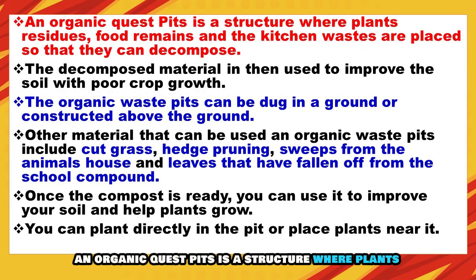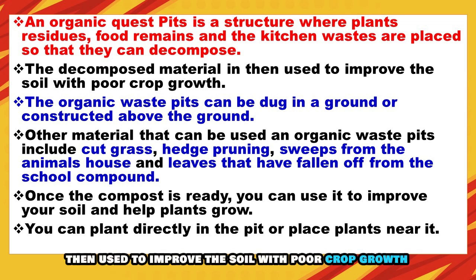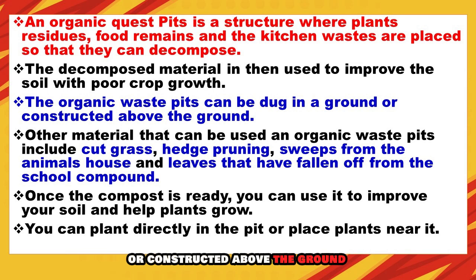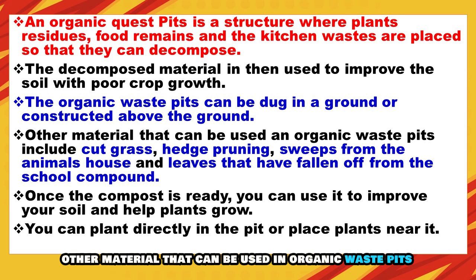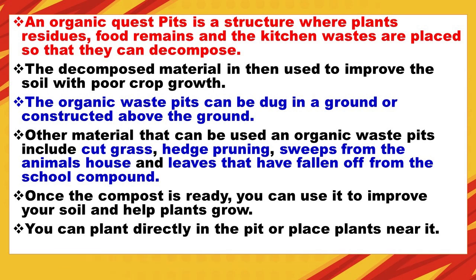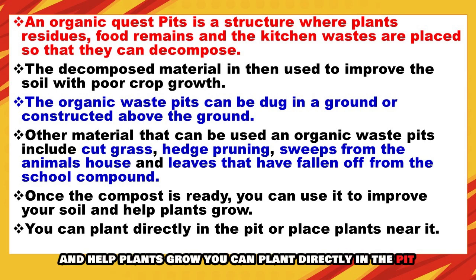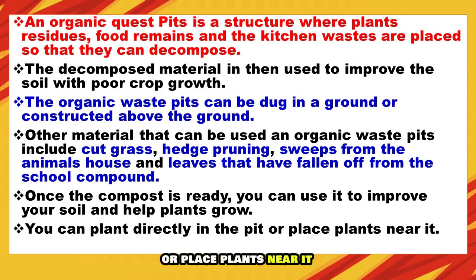An organic waste pit is a structure where plant residues, food remains, and kitchen wastes are placed so that they can decompose. The decomposed material is then used to improve soil with poor crop growth. The organic waste pit can be dug in the ground or constructed above ground. Other materials that can be used include cut grass, hedge prunings, sweepings from animal houses, and leaves from the school compound. Once the compost is ready, you can use it to improve your soil and help plants grow. You can plant directly in the pit or place plants near it.